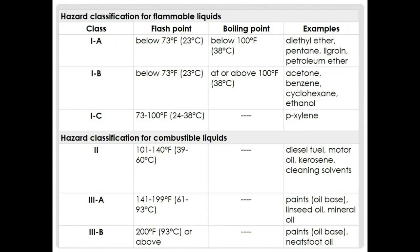Flammable liquids are divided into classes: Class 1A, Class 1B, and Class 1C, based on flash point and boiling point. Class 1A has a flash point below 23°C and boiling point below 38°C — examples include Diethyl Ether, Pentane, Ligron, and Petroleum. Class 1B has a flash point below 23°C and boiling point above 38°C — examples include Acetone and Benzene. Class 1C has a flash point between 23–38°C — example: P-Xylene.